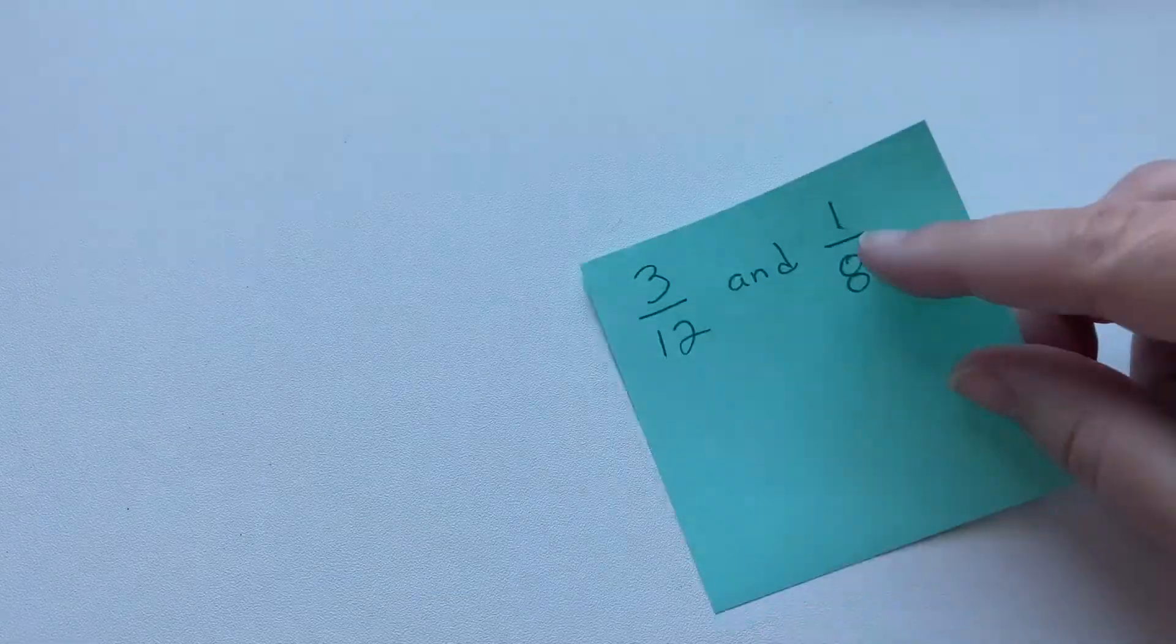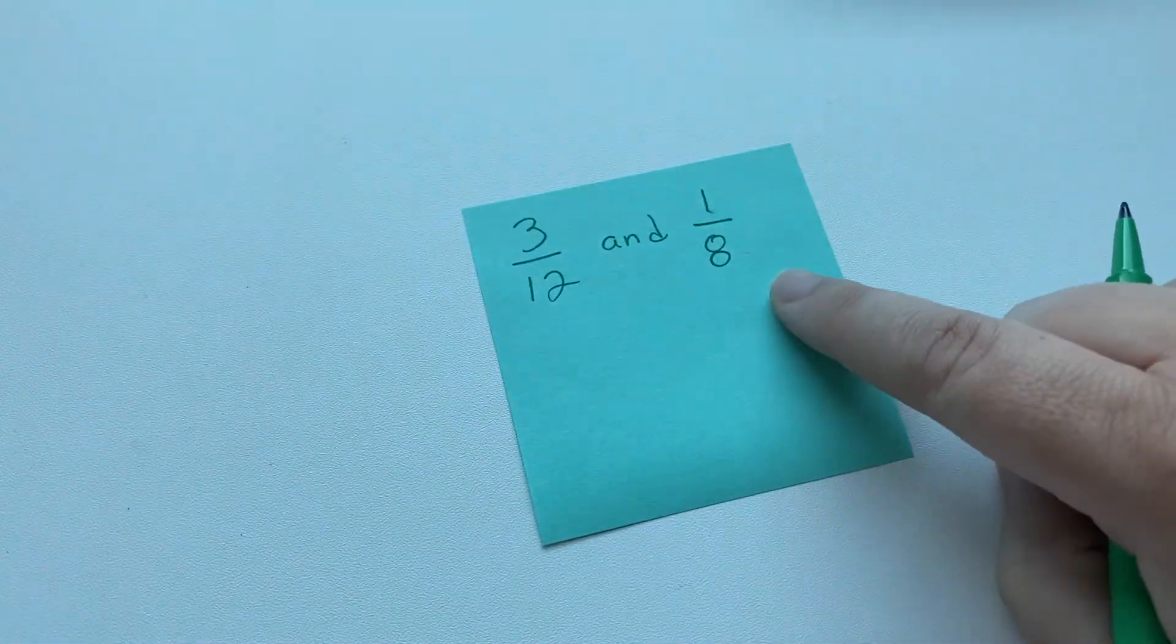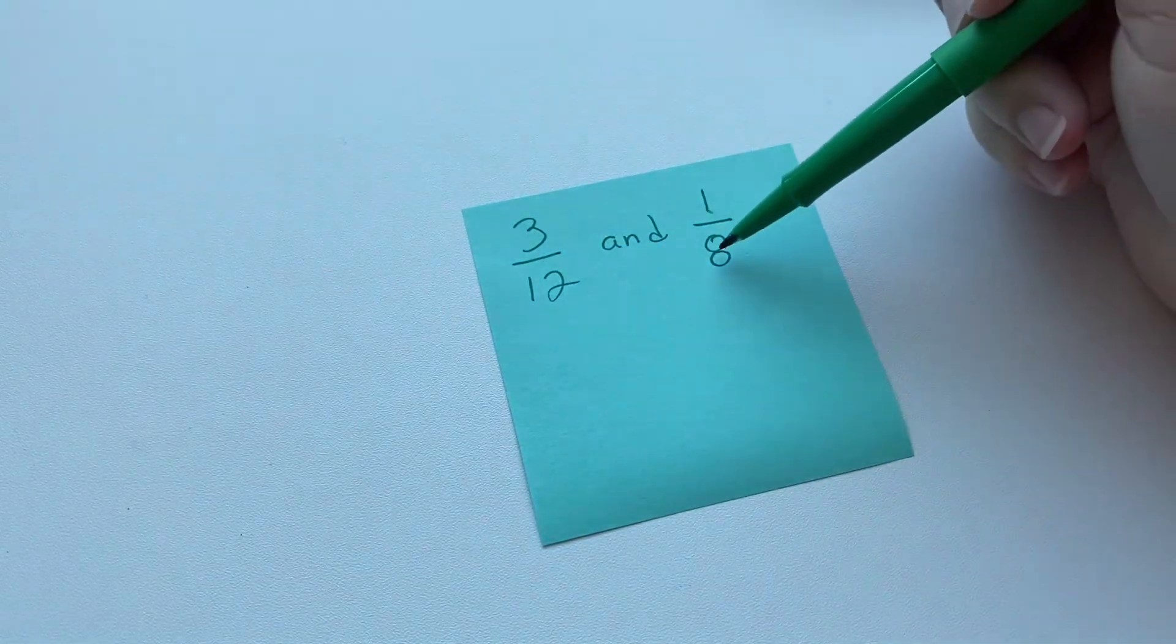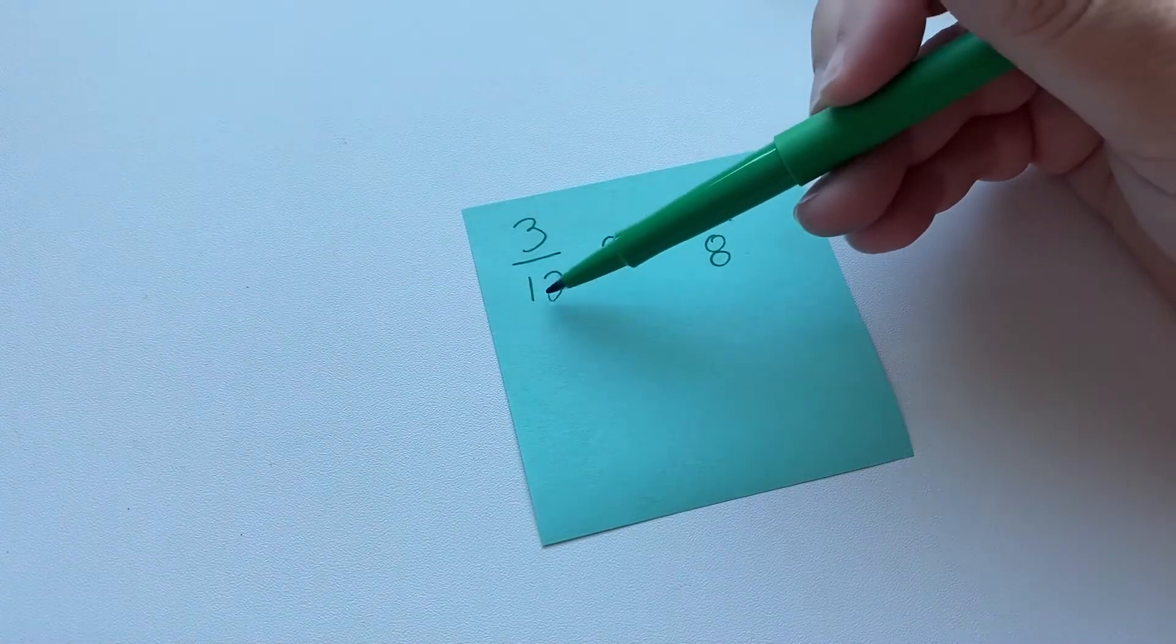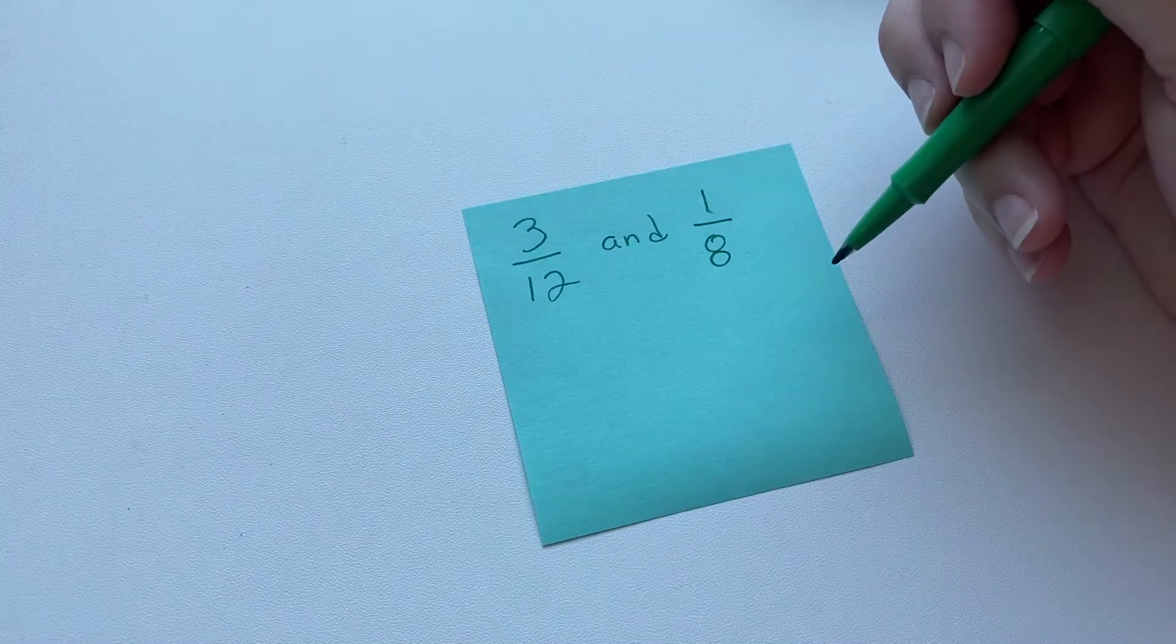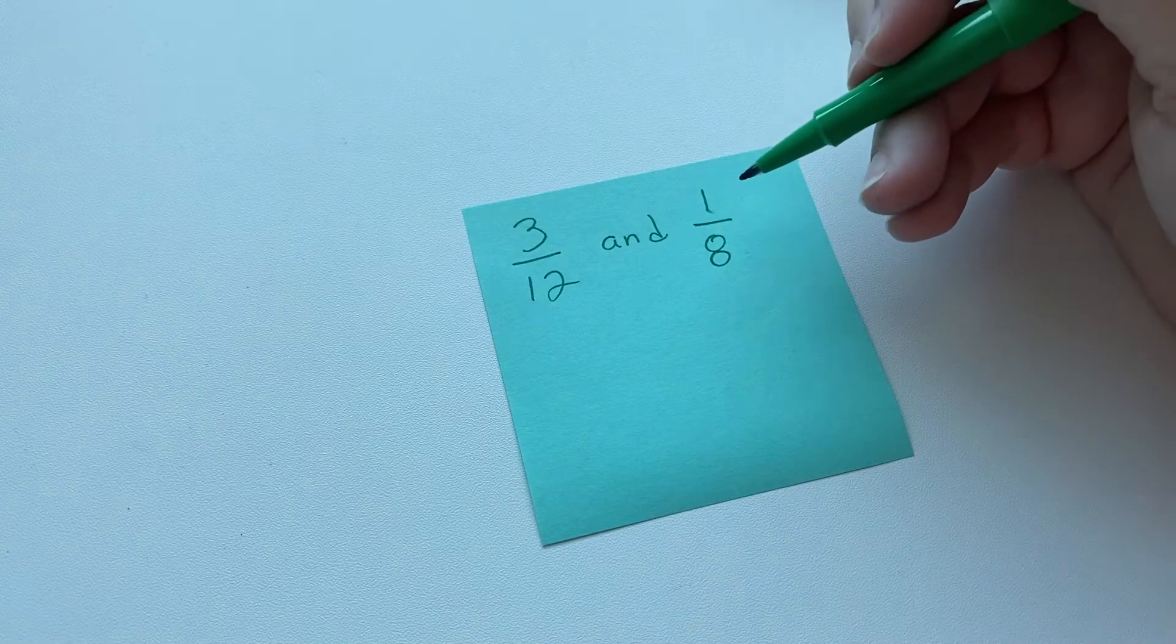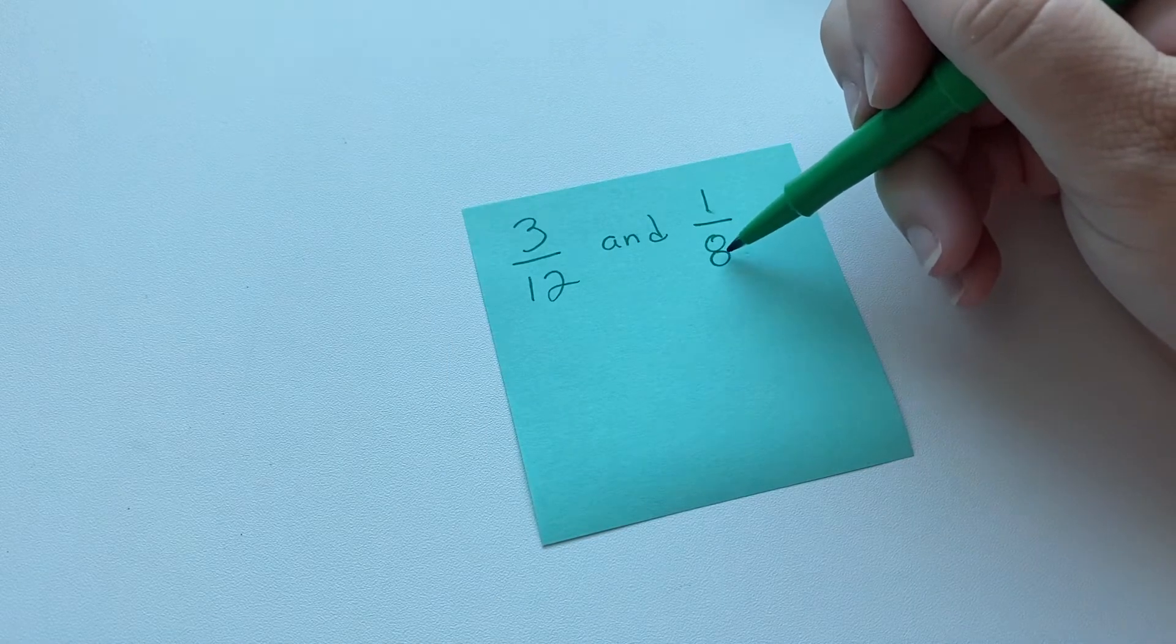So let's look at an example of this and why we would use this. If we had three twelfths and one eighth, and we're trying to find a common denominator, then we take the bigger number, and the smaller number does not go into the bigger denominator, so that's not going to work. We could multiply 12 times 8, but now we're going to start getting into having really big numbers, so they're a little bit harder to work with. So there are other ways to kind of break this down, and one of them is to find the least common multiple.